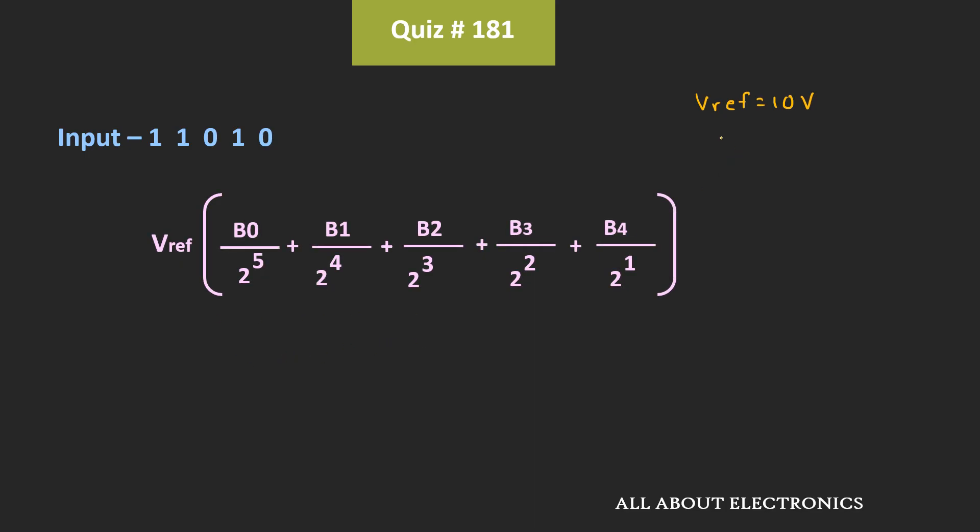Now in this case, this Vreference is equal to 10V. And here, this is equal to B0 and this is equal to B4. So for this, the output voltage Vout can be given as 10V multiplied by this B0 is 0. Similarly, this B1 is equal to 1. That is equal to 1 divided by 2 to the power 4.